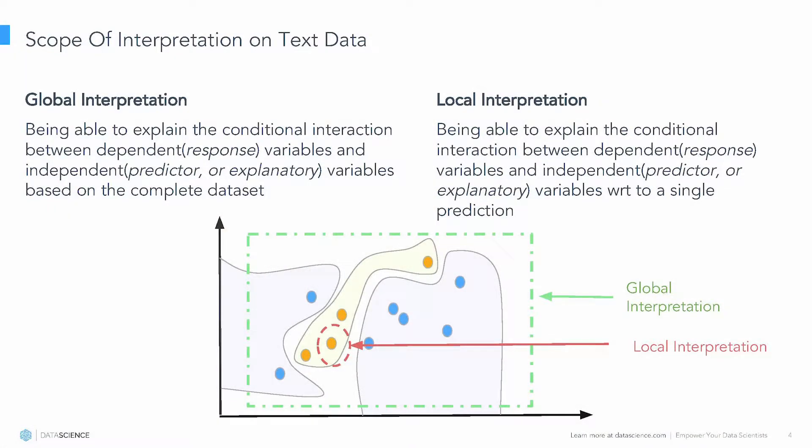So let's start with defining the scope of interpretation with respect to text datasets. We're going to be defining interpretation globally, which means we want to study the dependence of our variables with the target value considering the whole corpus. At the same time, we also want to evaluate a single prediction — not only how all the features are contributing to the corpus, but also how a single prediction is actually behaving and what features are contributing to its success or failure.